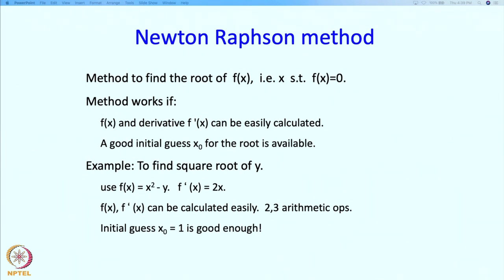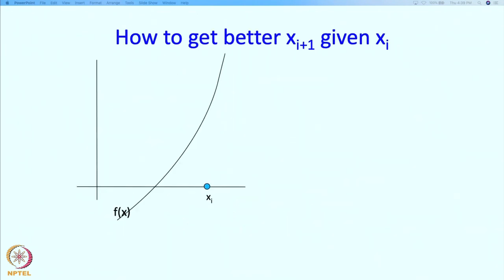We also need an initial guess. For this square root finding problem, it turns out that x0 = 1 is a good guess. Actually for this problem the guess requirement is easily met — essentially any number will be okay. This is again an iterative method, and the key step is to get a better approximation of the root than the one that has been given to us. We have been given xi as our current approximation, and we are going to find xi+1, a better approximation.